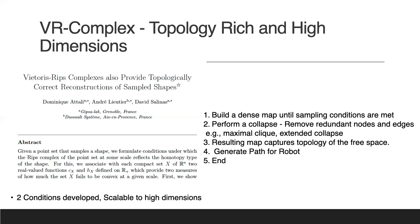At a high level, the approach taken from that paper is: first, build a dense map — in our case, we keep sampling configurations into the C-space, but it could also be a point cloud or sensor information. Once sampling conditions are met, we perform a collapse. Rather than computing the expensive maximal clique, we look at the notion of an extended collapse. The resulting map then captures the topology of the free space, and from there we generate a path for our robot.